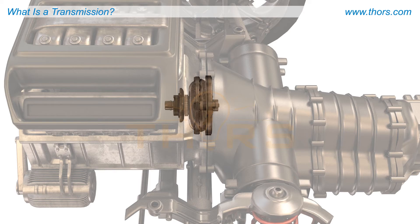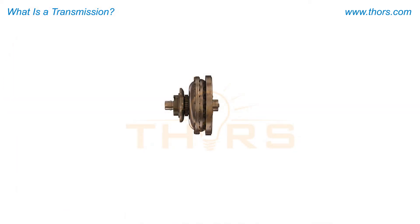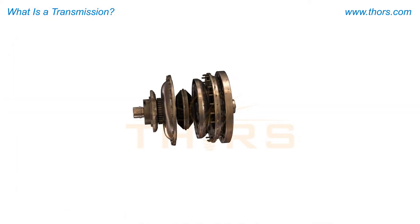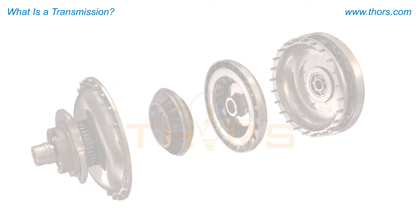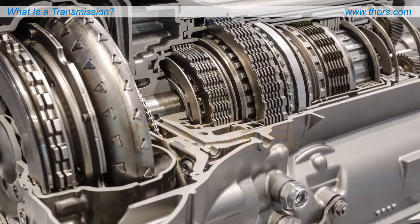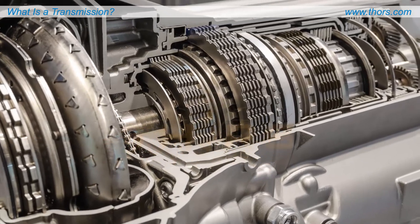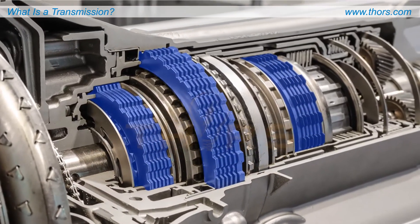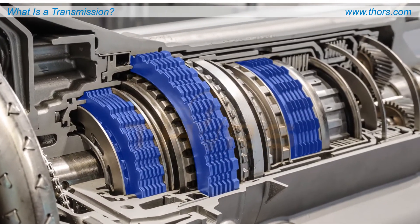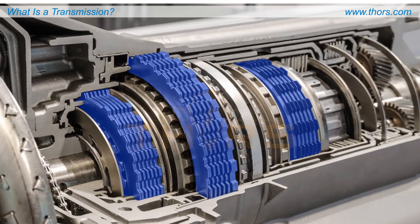The first main component is the torque converter, which is responsible for multiplying torque provided by the engine. A series of clutch packs are the next, which are responsible for seizing or clutching and releasing the gears and shafts as necessary for the operation.